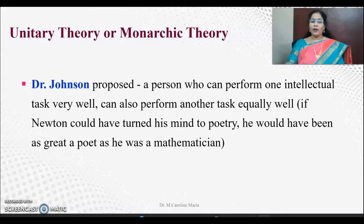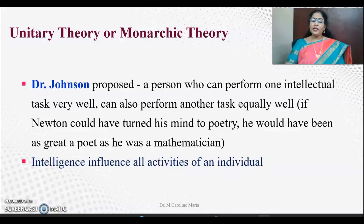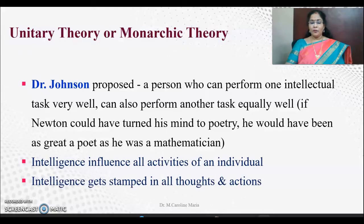Unitary theory or monarchic theory was proposed by Dr. Johnson. He said that a person who can perform one intellectual task very well can also perform another task equally well. He also said Newton could have tuned his mind to poetry and he would have been a great poet as well as a great mathematician. Intelligence influences all activities of an individual and gets stamped in all thoughts and actions — it determines general ability.